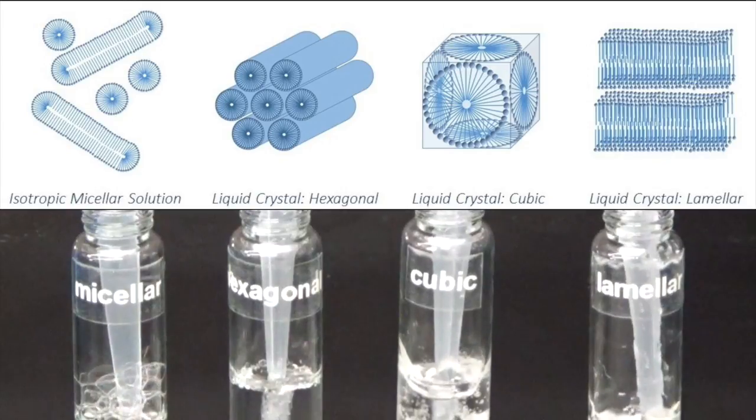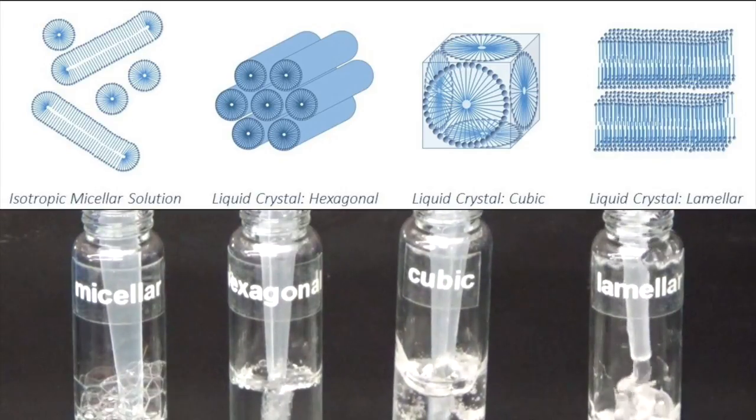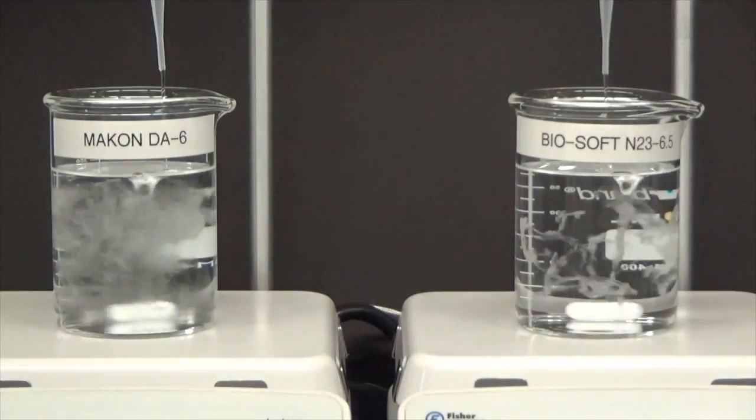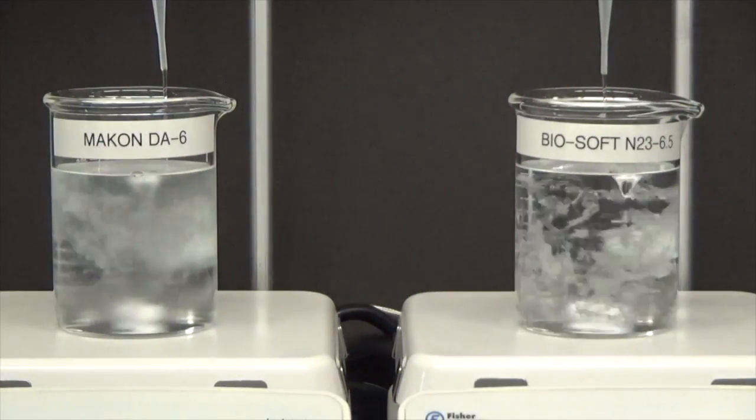The specific types of phases that form can have a very large impact on viscosity and gel persistence. Surfactant structure strongly affects its propensity to form liquid crystal phases.